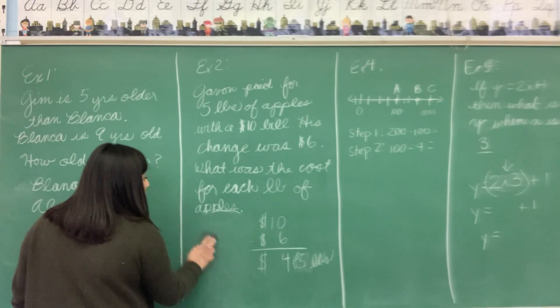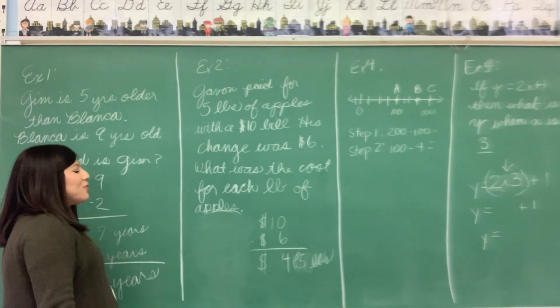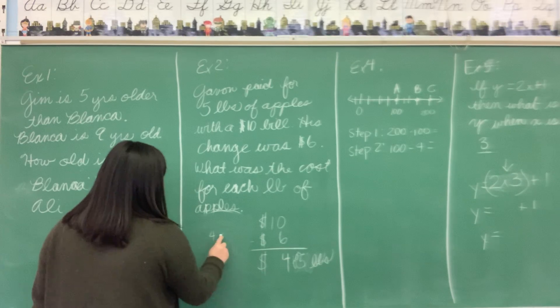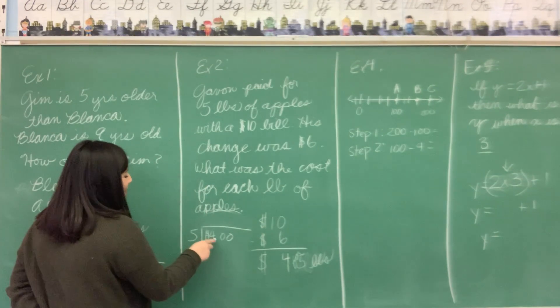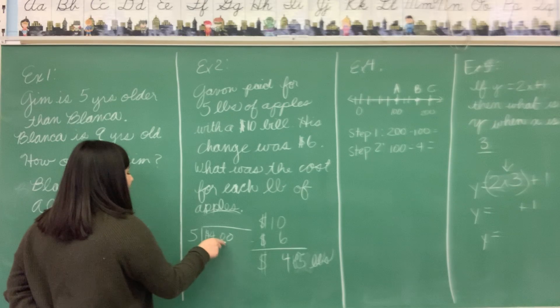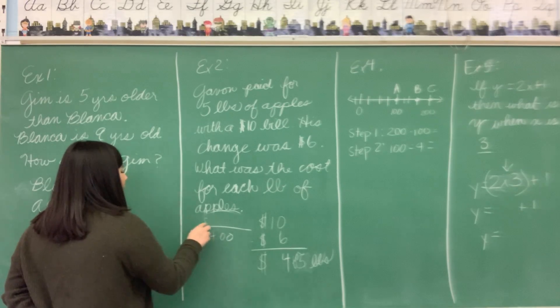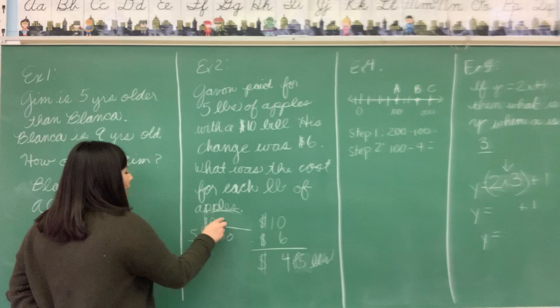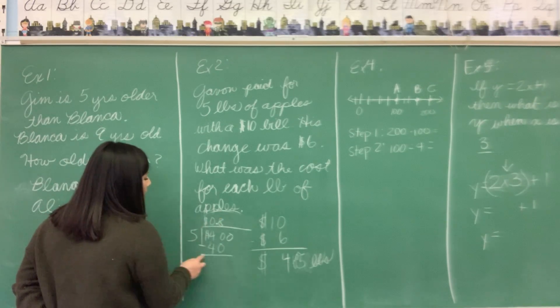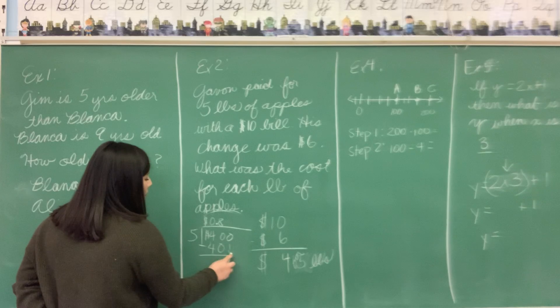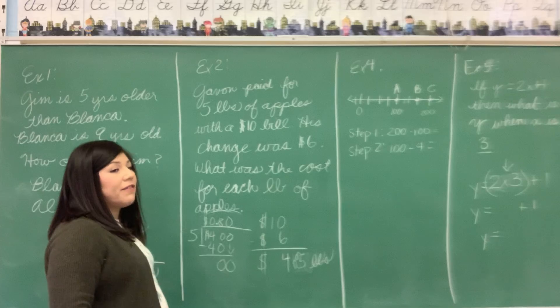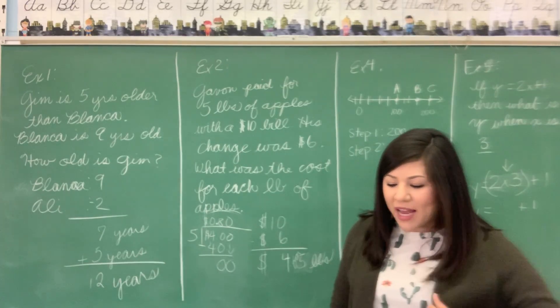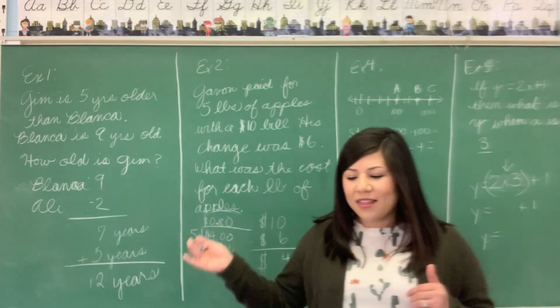Although that was a good answer, what we have to do is we have to take $4 and divide that by five. Four divided by five, you cannot do that. So let's take 40 divided by five. We'll put zero here because we didn't put anything here in our decimal. Is eight. Eight times five is 40. Forty minus forty is zero. Bring down the zero. Zero divided by five is zero. So the cost for each pound of apples was 80 cents. Sorry for that first mistake. Although it was a good answer, but nonetheless, wrong answer.